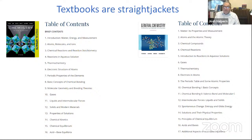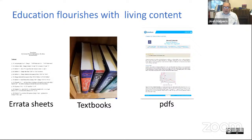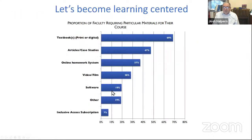What do I mean by textbooks as straitjackets? Here are two chemistry textbooks — if you look through the table of contents, they're exactly the same. We want living content. When I was a student, when you bought a textbook you got an errata sheet. Now we have PDFs, and PDFs are a horror to edit. We think textbooks need to become learning centers — they need to provide the text material but also other things that faculty want to use to teach their students and students want to learn from. The textbook of the future is a system, not a book.